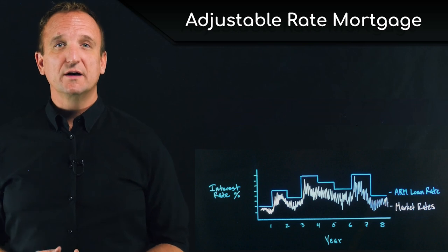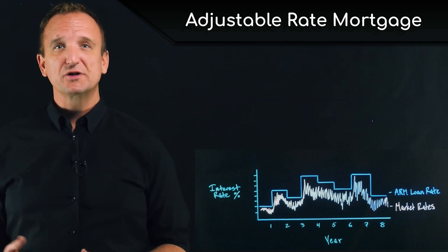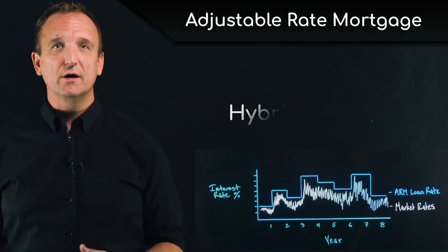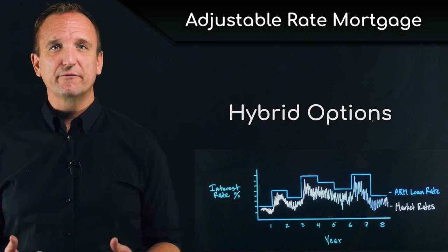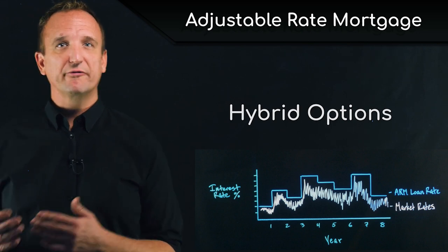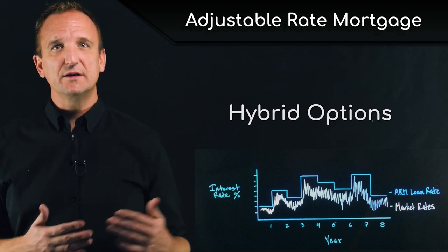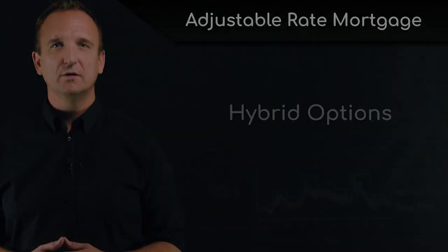Adjustable rate loans can come in a variety of variations or hybrid options, such as interest only for the first couple of years, or a loan that is fixed for the first five or ten years and then becomes adjustable.